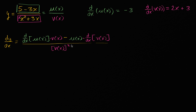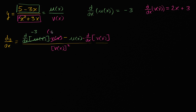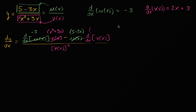Now we know everything we need to substitute back in. The derivative of u with respect to x is negative three. V of x is x squared plus three x. U of x is five minus three x. The derivative of v with respect to x is two x plus three. And v of x in the denominator is x squared plus three x.